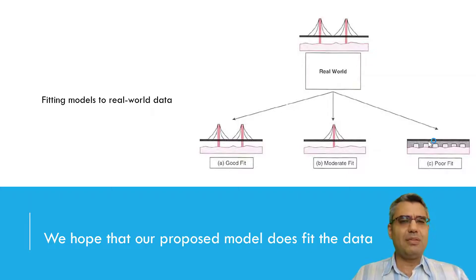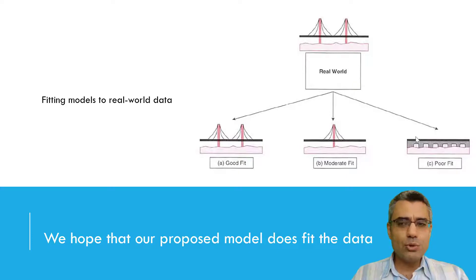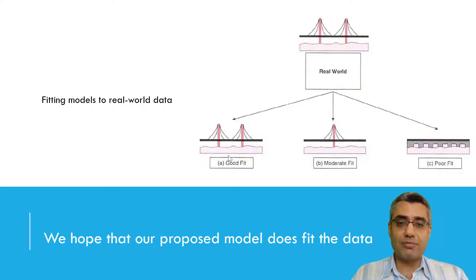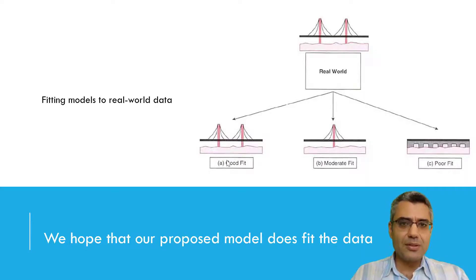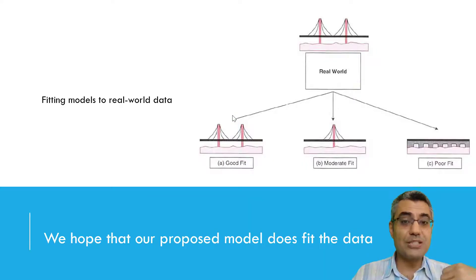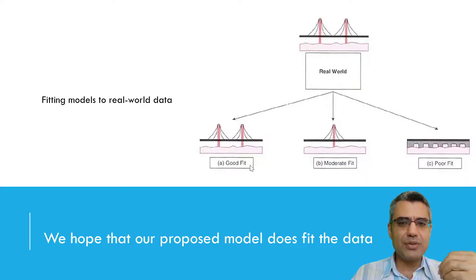When it's poor fit, we should not test the hypothesis — because even if you find a positive significant relationship, you can't generalize it to the real world model. The results you get on your model in the lab won't necessarily explain the phenomena in the real world. Here with good fit, I can generalize the findings with a high confidence level to the real world model, and the results can be used. So the first step is to see whether the model has a good fit. Goodness of fit chi-square is the measure used for this purpose.